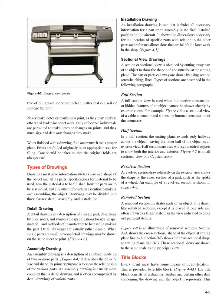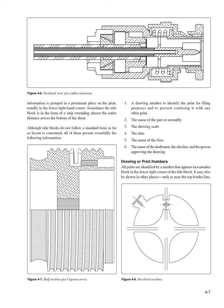Title blocks: Every print must have some means of identification, provided by a title block. The title block consists of a drawing number and certain other data concerning the drawing and the object it represents. This information is grouped prominently, usually in the lower right-hand corner, and sometimes in the form of a strip extending across the bottom of the sheet. All title blocks present essentially the following information: a drawing number for identification; the name of the part or assembly; the drawing scale; the date; the name of the firm; and the name of the draftsman, checker, and person approving the drawing.